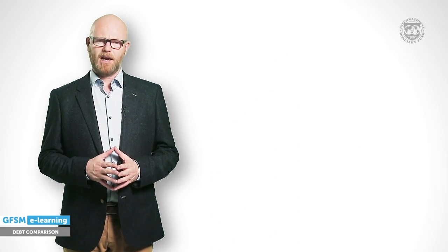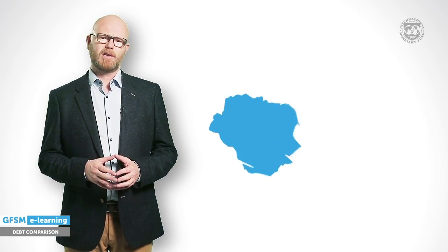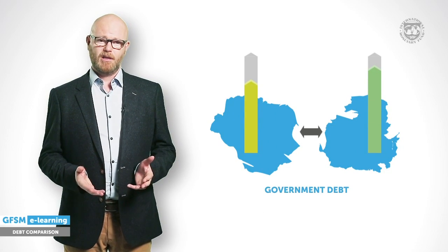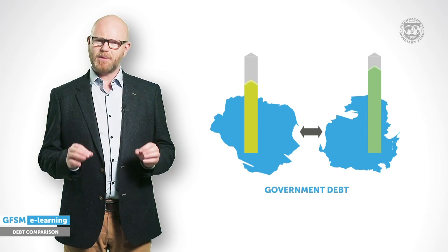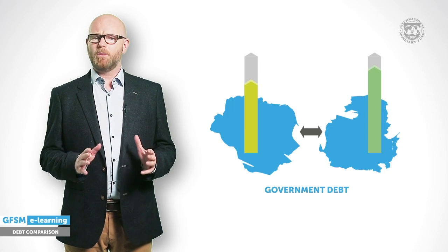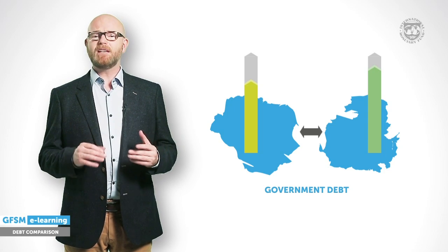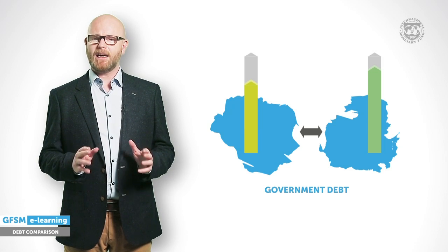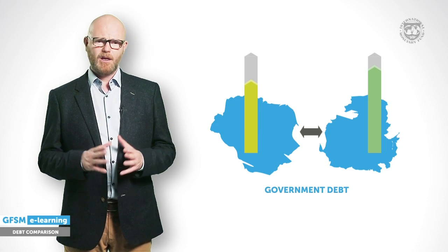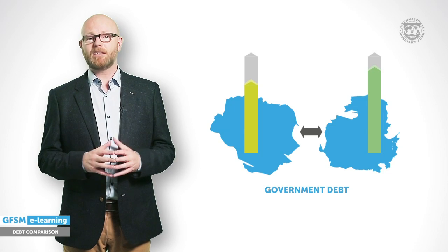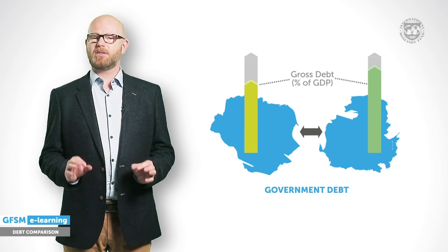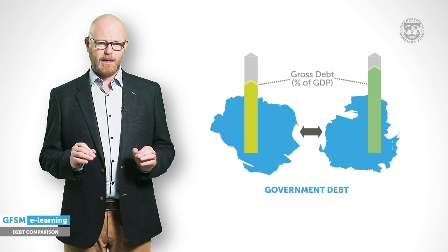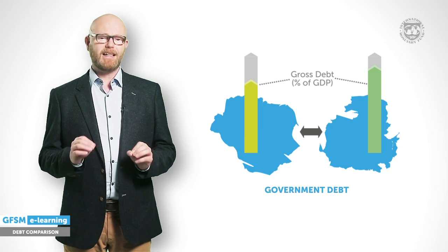How can we best compare the government debt levels of two countries? How can we ensure that we are not comparing apples and oranges? Although national government debt data may appear to be comparable, these data are composed of several dimensions and comparability cannot be taken for granted. One long-standing practice is to express gross debt as a percentage of GDP, but this is only a first step towards the comparability of debt data.